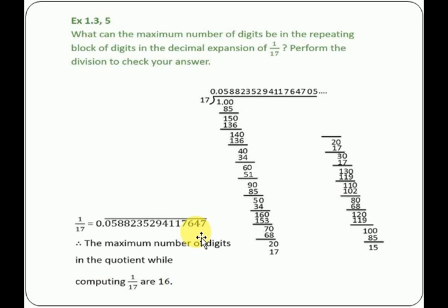The maximum number of digits in the quotient while computing 1 by 17 are 16. The repeating block of digits in the decimal expansion is after 16.